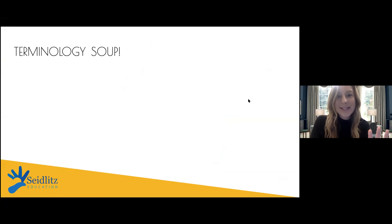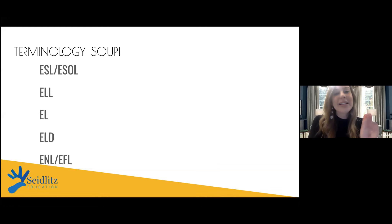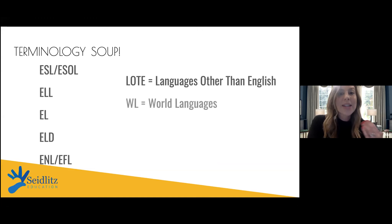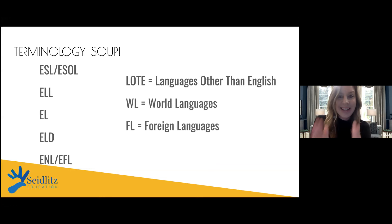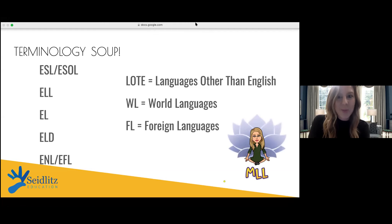Let's talk about acronyms — something I'm calling terminology soup — because even in the chat I can see acronyms from all over the board. So we have ESL, ESOL, English language learners, English learners, ELD, ENL, and EFL — slightly different, but the goal is teaching English to our students. LOTE stands for languages other than English, and we also see world language and foreign language teachers in this category. At the end of the day, our goal is language acquisition for our multilingual learners.